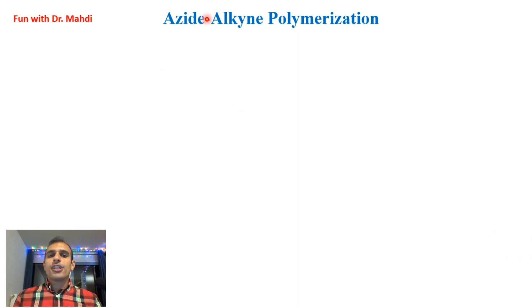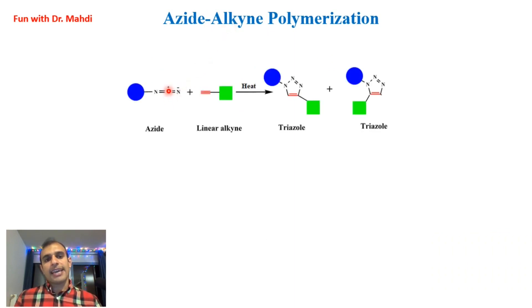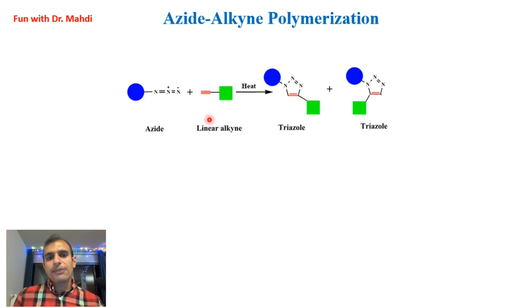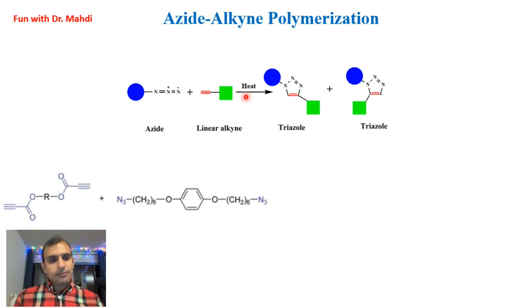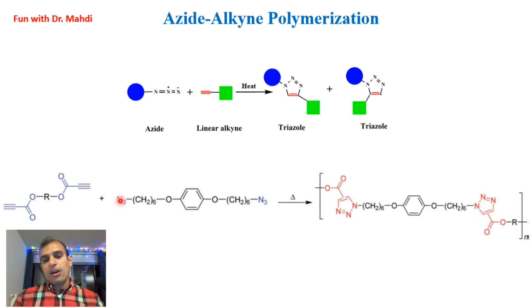The last example is azide-alkyne polymerization — it's a type of click chemistry reaction between azide and alkyne. For doing this reaction we need copper as a catalyst, which is why we call it CuAAC: copper-catalyzed alkyne-azide cycloaddition. However, we would like to do metal-free polymerization, so instead we use heat — increasing the temperature to 100°C. Definitely the reaction rate is much faster when using copper, but we want metal-free polymerization. In the structure of one monomer we have two alkyne groups, and in the structure of the other monomer we have two azide groups. After doing the click reaction with increased temperature, we will have a polymer like this.